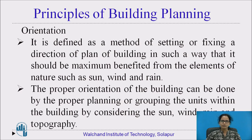We have seen the principles of building planning. In all, there are 11 principles. Orientation is also a principle in building planning. It is defined as a method of setting or fixing the direction of the plan of a building in such a way that it should be maximum benefited from the elements of nature such as the sun, wind, and rain. The proper orientation of the building can be done by proper planning or grouping the units within the building by considering the sun, wind, rain, and the topography.